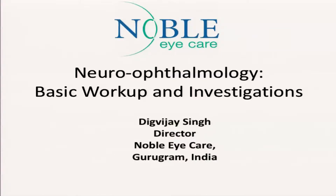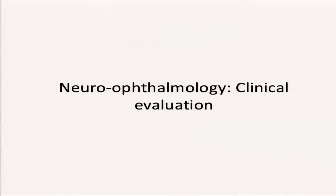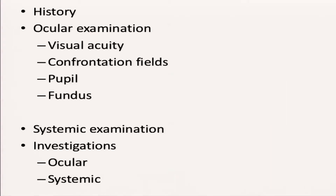The first thing in any case of neuro-ophthalmology is the history — history-taking is a very vital part. Then we have the ocular examination and the systemic examination, which is almost an equal part to the ocular examination in neuro-ophthalmology cases, and then there are basic investigations, both ocular and systemic.